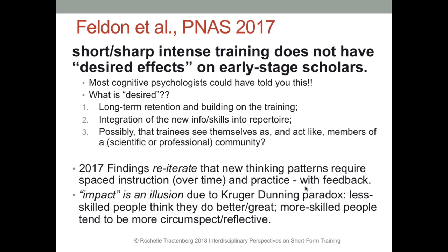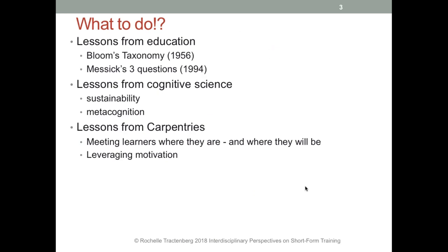Another feature a cognitive scientist would recognise is the paradox sometimes called the Kruger-Dunning paradox. Less skilled people will think they are learning or doing really well; more skilled people tend to be more circumspect. More skilled people tend not to go to short, sharp bootcamp training. When you ask a less skilled person about the impact of such training, they will exaggerate — they'll say 'this is going to help me so much' — but they aren't accurately reporting their true state.